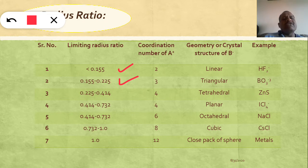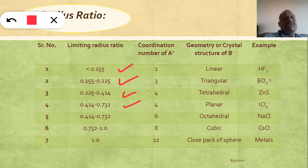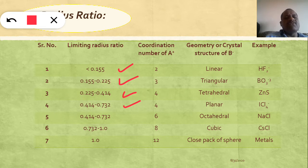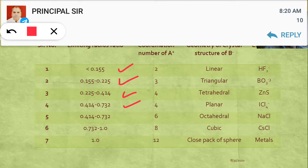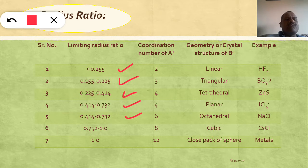If the radius ratio ranges from 0.225 to 0.414, the coordination number is 4 and the geometry is tetrahedral. If the radius ratio ranges from 0.414 to 0.732, the coordination number of the cation will be 6 and the geometry will be octahedral — for example, NaCl. If the radius ratio value is 0.732 to 1, the coordination number is 8 and the geometry is cubic — cesium chloride is the example.